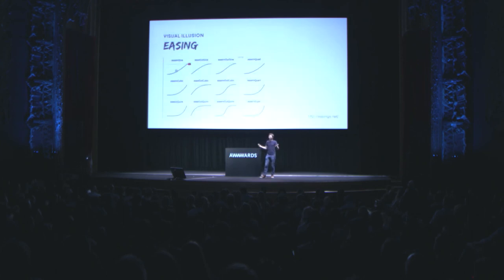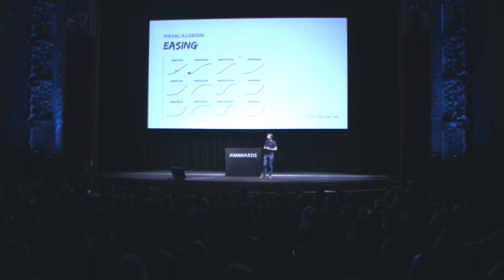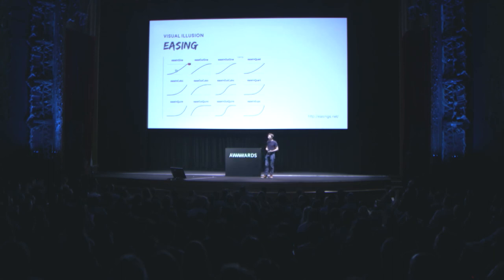For visual illusions, all it takes in many cases is easing, and I'm sure many of you have used it. The linear easing effect looks a lot slower than ease-out cubic, even when both take the same amount of time.